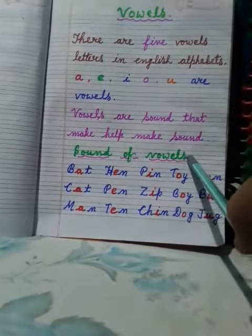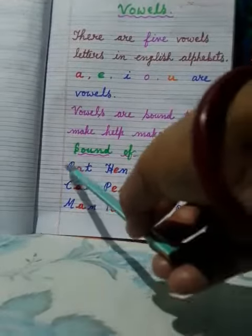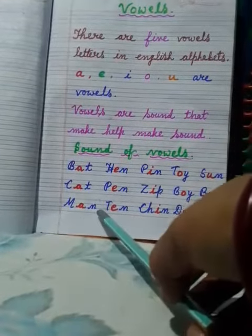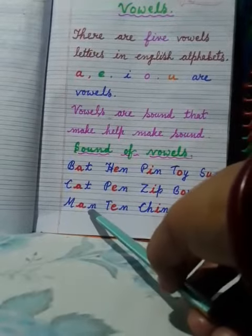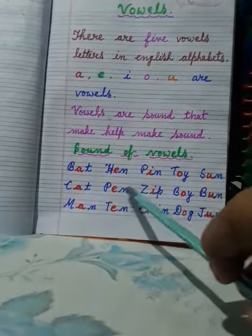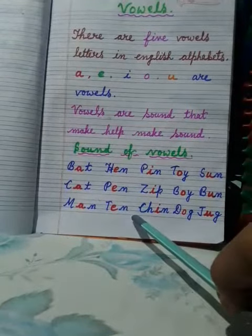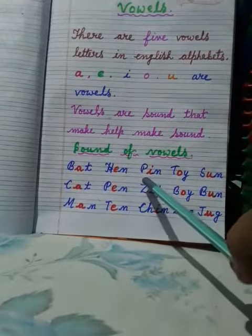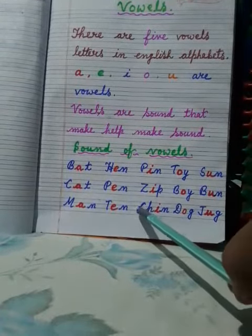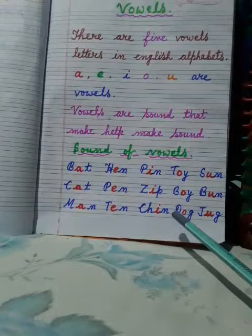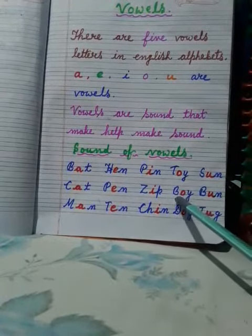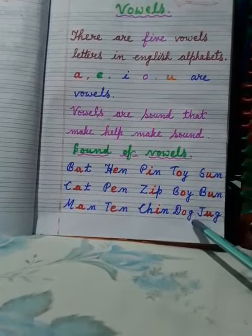Vowels letters sound को बनाने में मदद करता है। Now, sound of vowels. D-O-I: Toy. B-O-I: Boy. D-O-G: Dog.